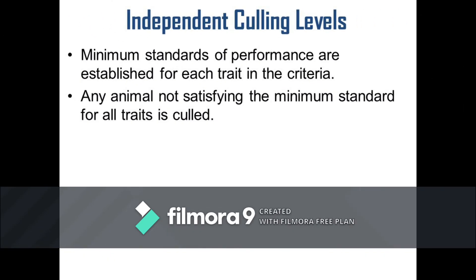Next is the independent culling levels. This is a method where minimum standards of performance are established for each trait in the criteria, such that only animals that satisfy the minimum standard set for all traits are selected and used in the succeeding breeding. Conversely, progenies that fall below the desired quality in any one characteristic being measured will be culled regardless of their level of excellence on other traits.